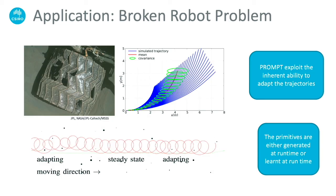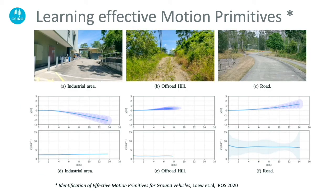A key advantage of PROMPTO is its ability to allow adaptation of the underlying motion primitive distribution. As shown in the top left, with scenarios like damage to the wheel of a lunar rover, the robot's kinematics gets affected. A simple recalibration of the motion primitives either from a higher module or learned in-situ allows such damaged robots to navigate obstacle fields. In previous work, we showed how we can extract the weight distribution constituting the probabilistic motion primitives for a variety of field environments, and such learned motion primitives can be seamlessly incorporated into the PROMPTO planning pipeline.